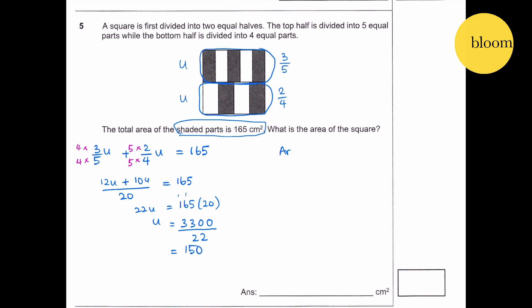Area of the square is U plus U equals 150 plus 150, which gives you 300. So the answer is 300 cm square.